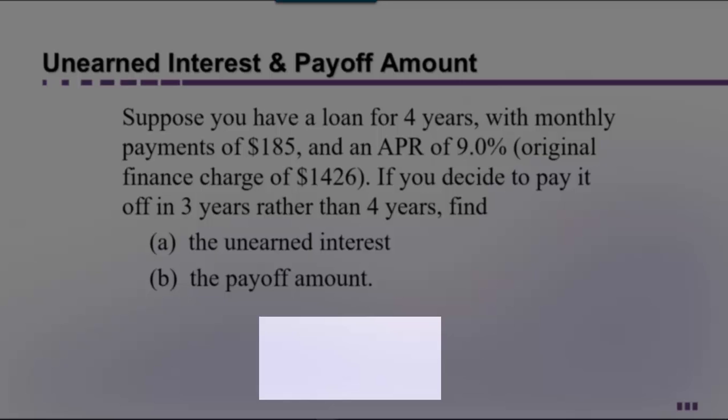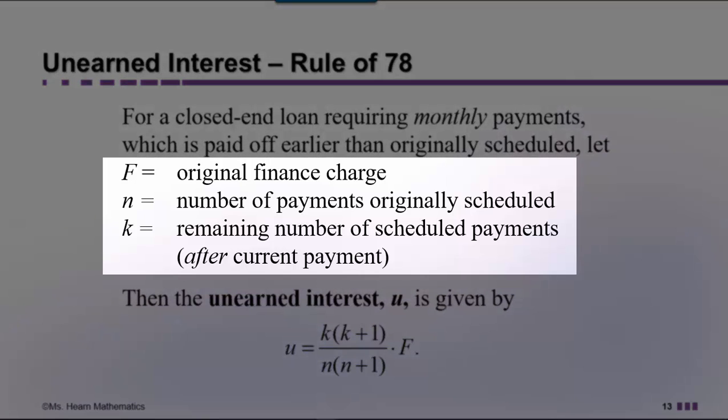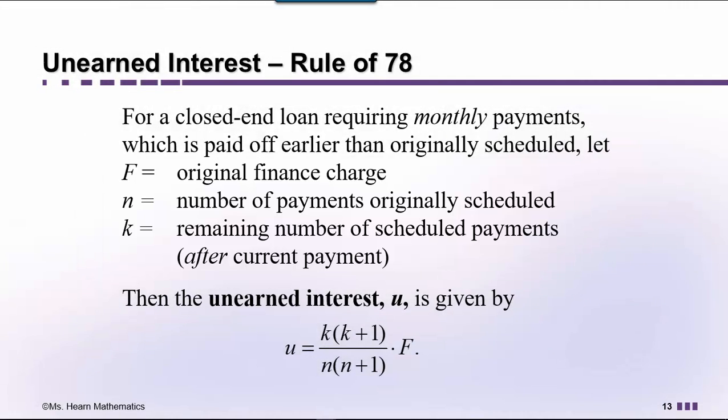Here's the formula for unearned interest. Let's talk about what each of the variables represents. If we have a closed-end loan requiring monthly payments, which is paid off earlier than originally scheduled, then capital F is our original finance charge — the amount of interest that we would be charged if we took the full amount of time to pay back the money. N is the number of payments originally scheduled, and K is the number of remaining scheduled payments after our current payment. If the original finance charge is not provided, that's when we get to use our APR table.